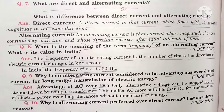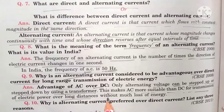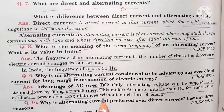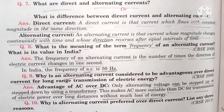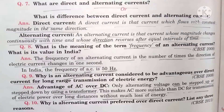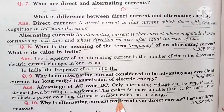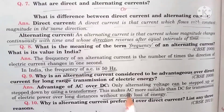This makes AC more suitable than DC for transmission of electric power over a long distance. If we have to send electric current over a long distance, then AC is better than DC, and in AC there is very little loss of energy. The power station is very far away from our homes.